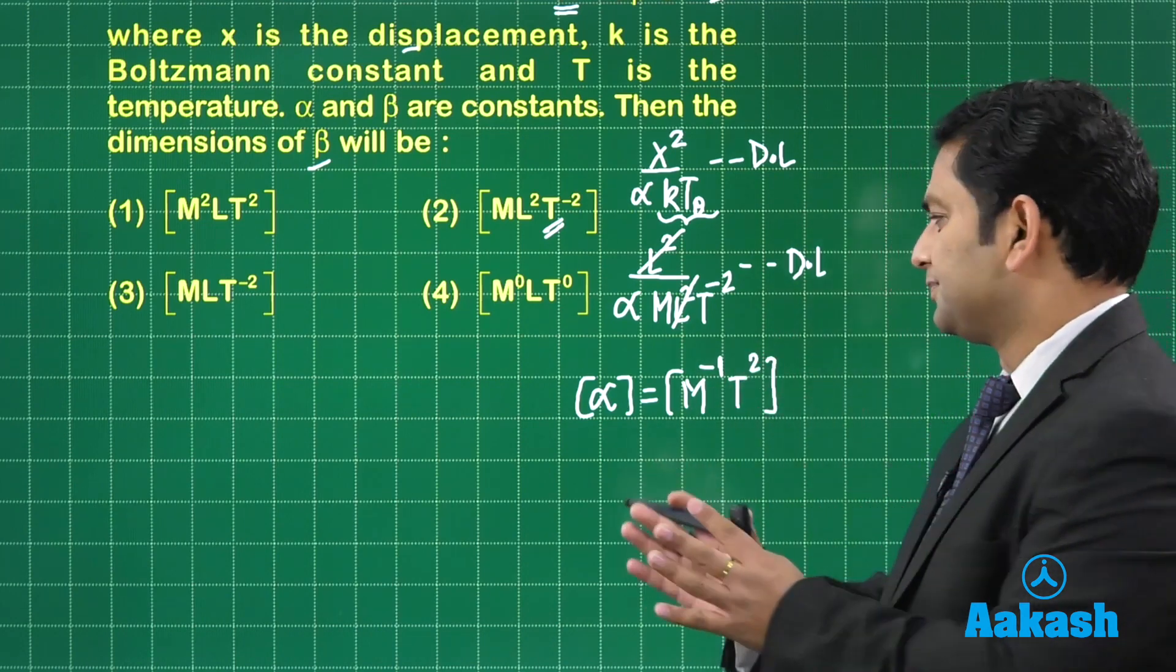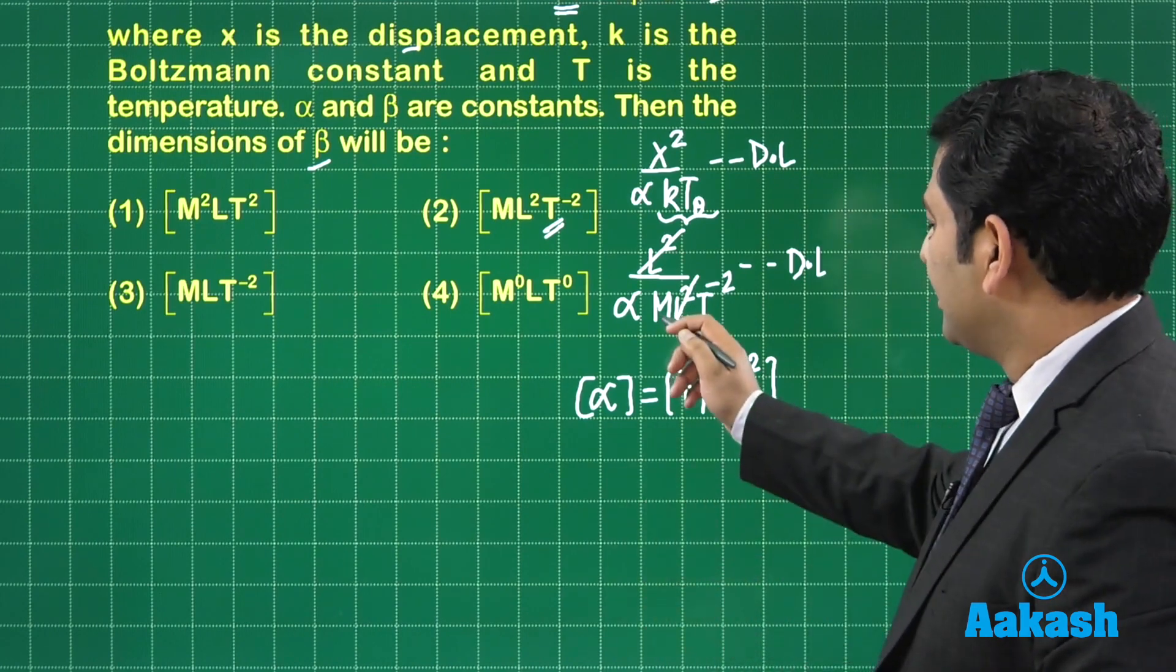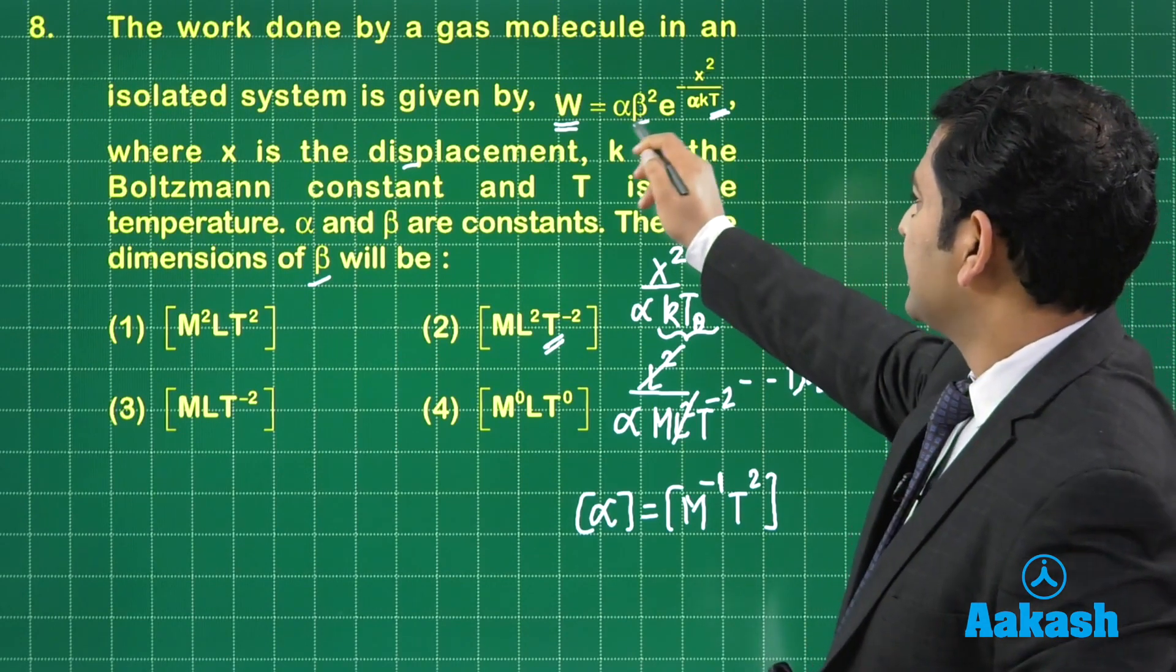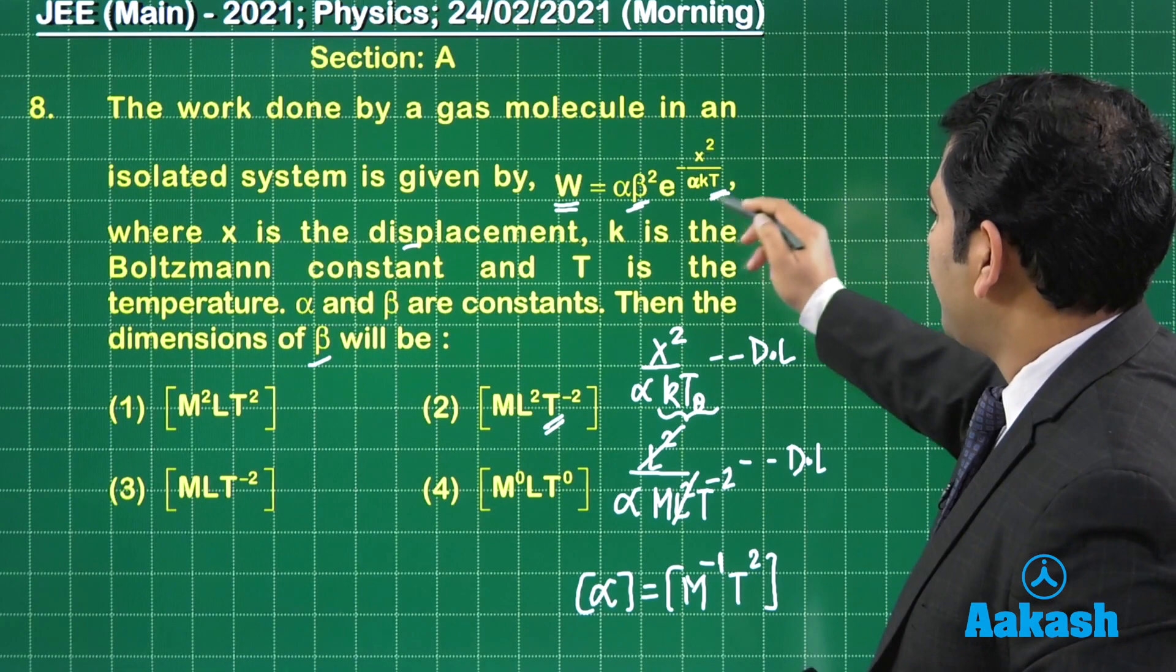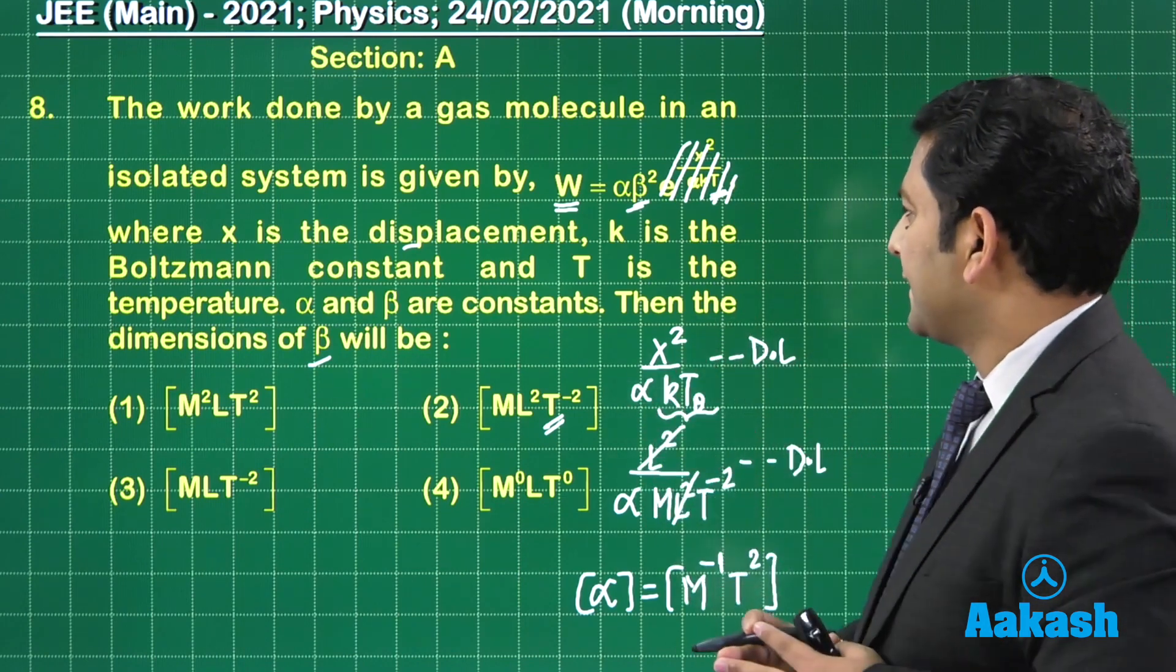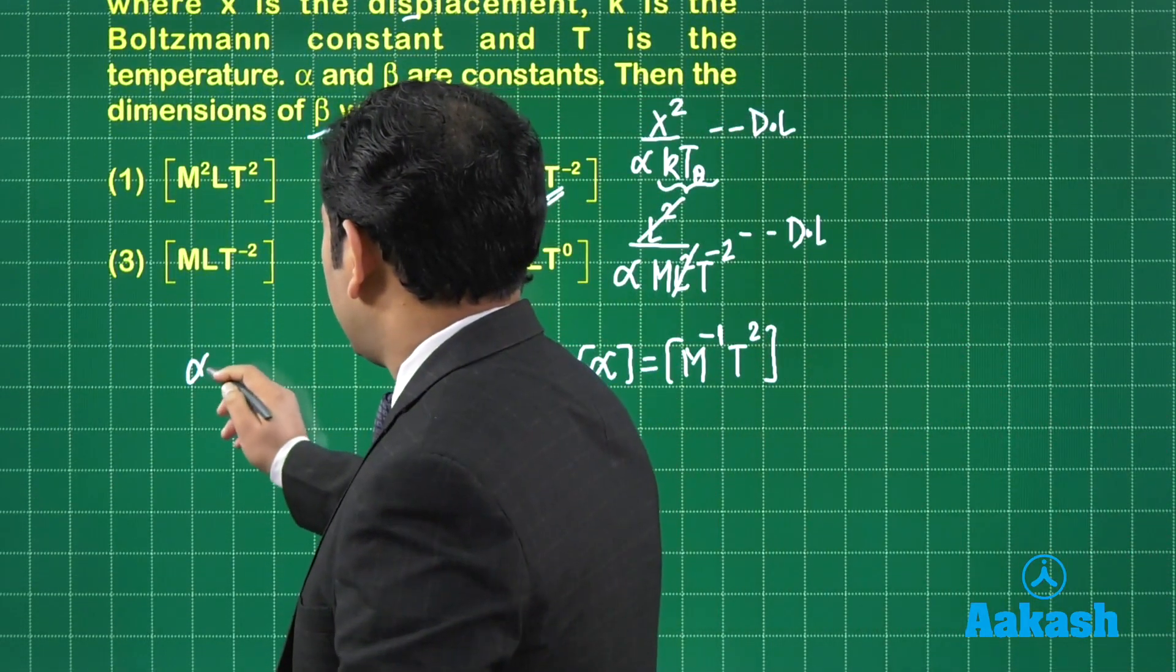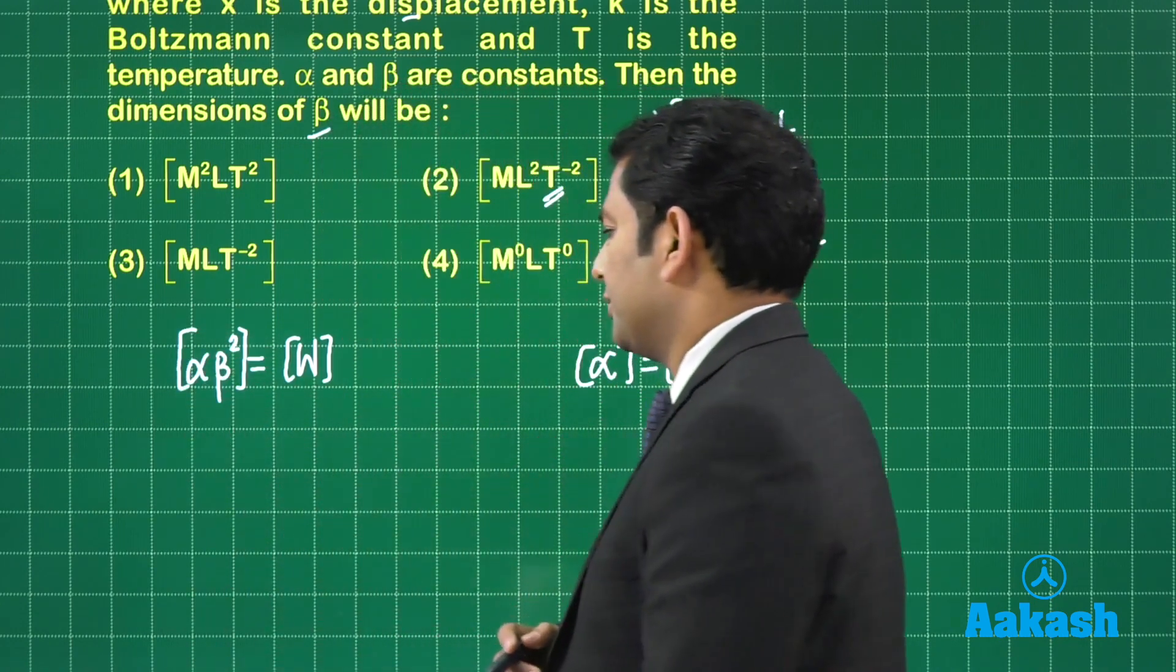We found the dimensional formula for alpha by making the entire thing dimensionless. The M T minus 2 has to be cancelled with the dimensional formula for alpha. I also need to calculate the dimension of beta. Apart from the power being dimensionless, the entire exponent is also dimensionless. The dimension of alpha beta squared is the dimensional formula for work done.